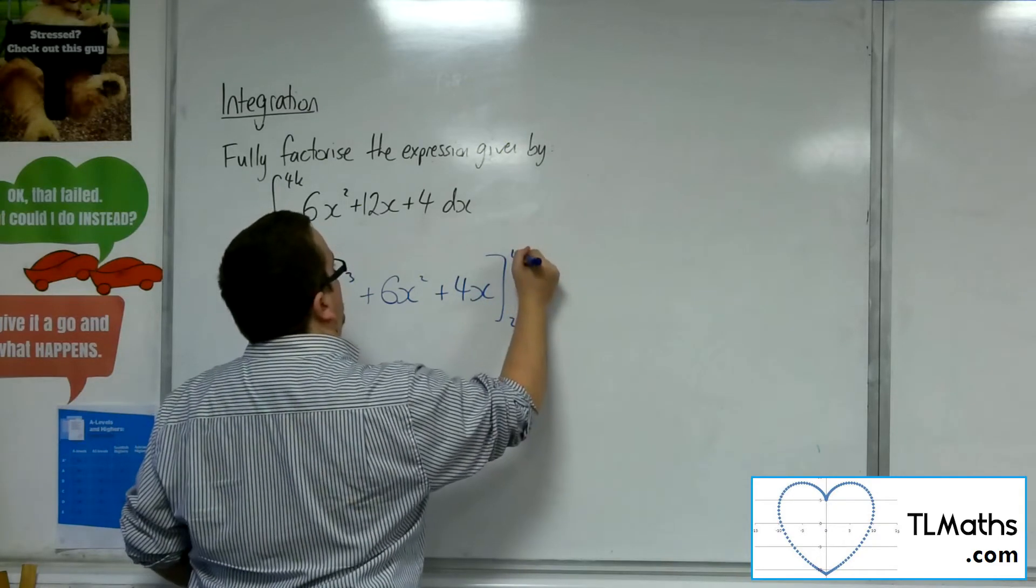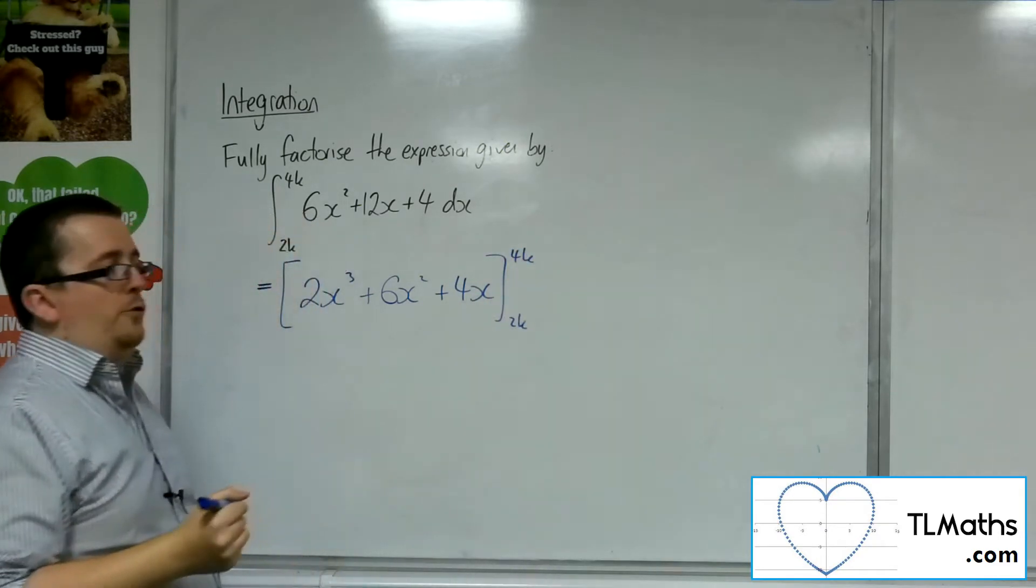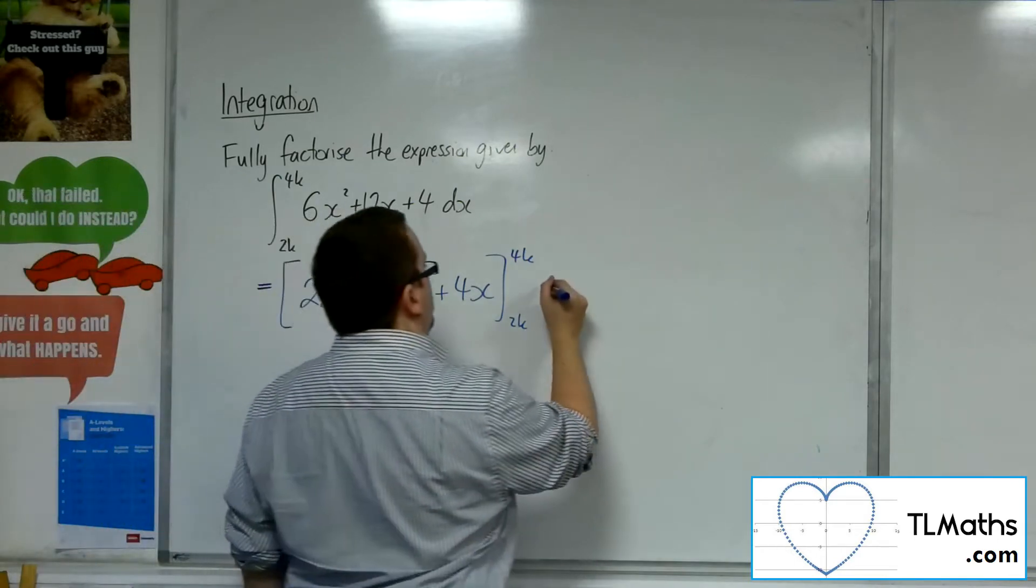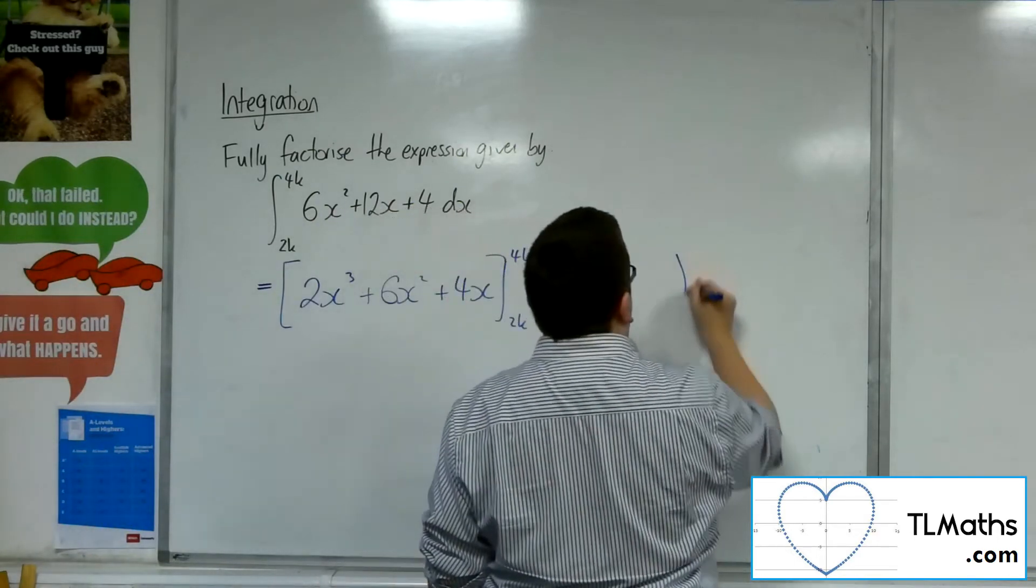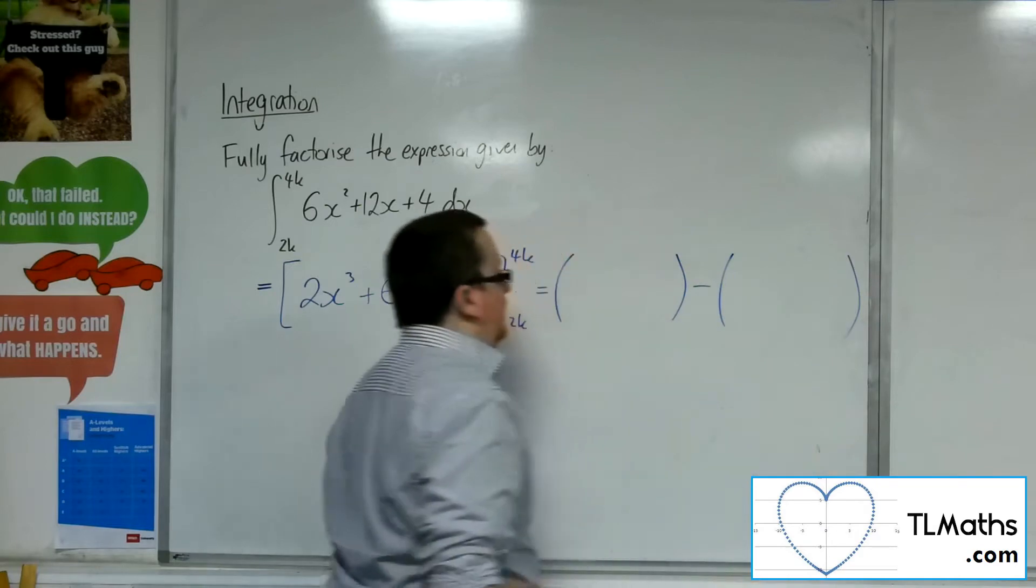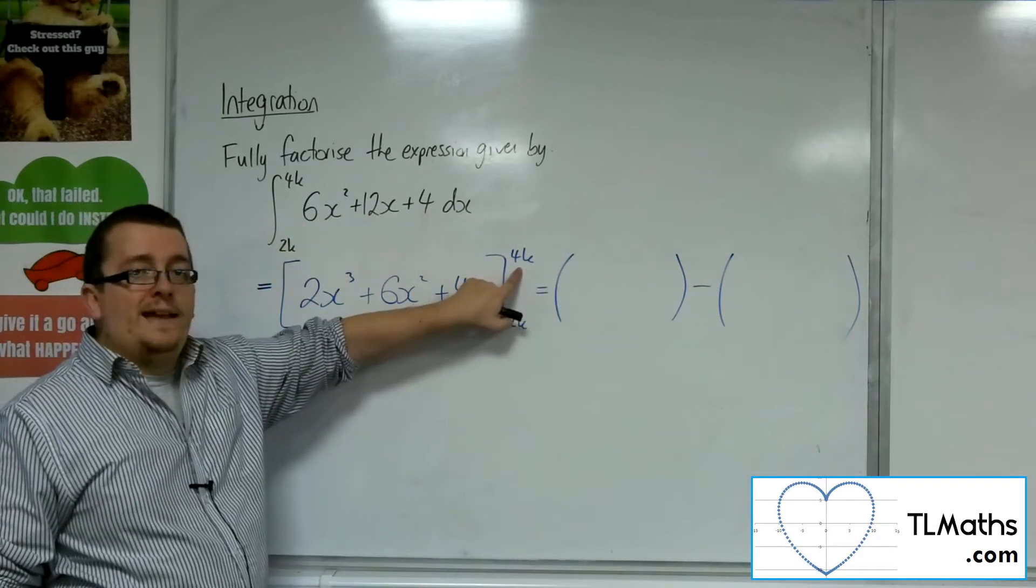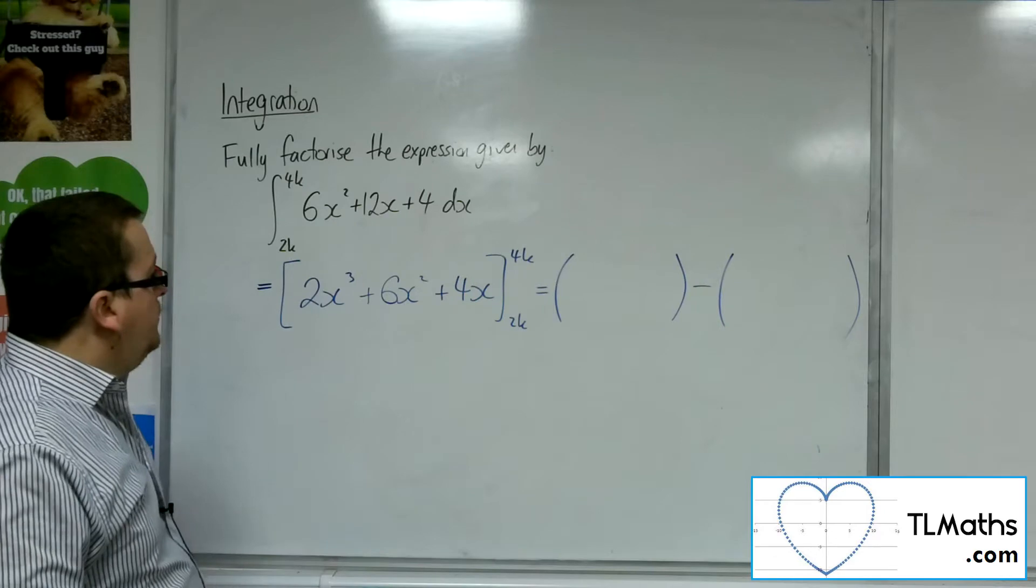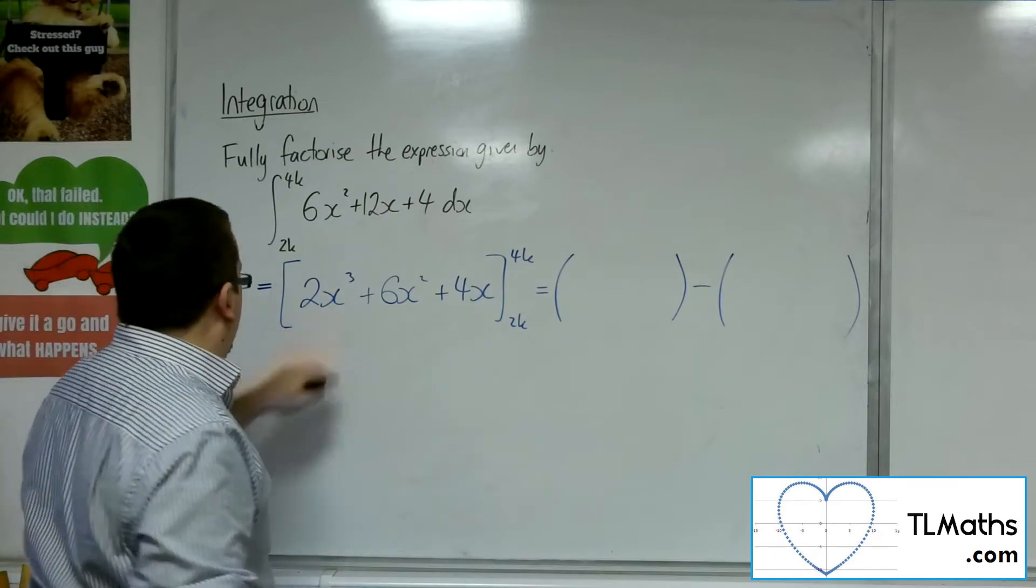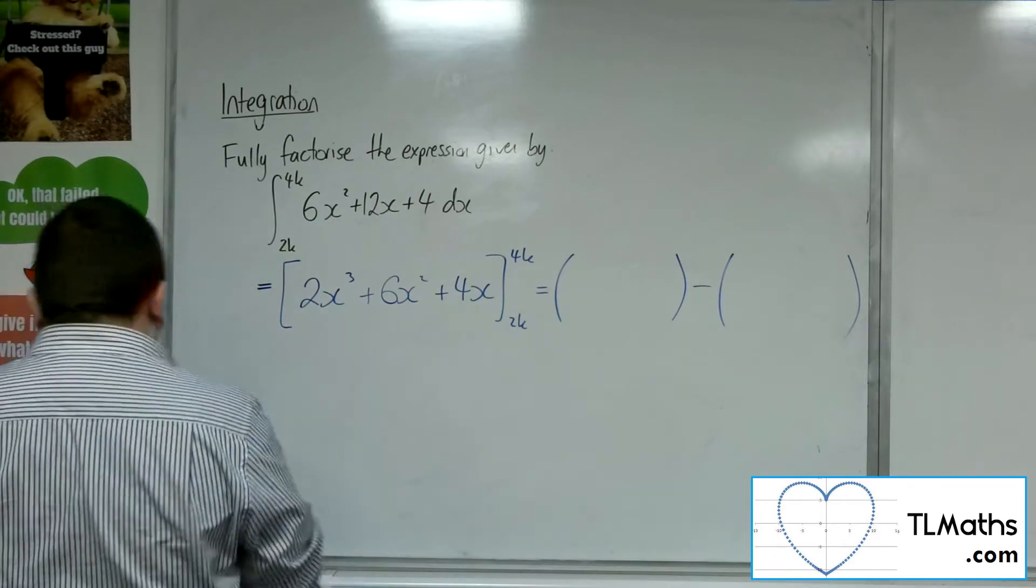So I'm going to be evaluating that between 2k and 4k. So I want to open up two brackets. I'm going to substitute in the 4k first. Let's make sure I get all these bits right.